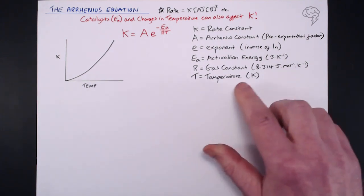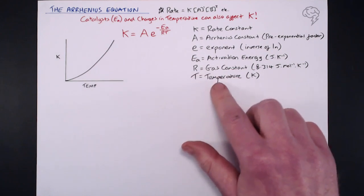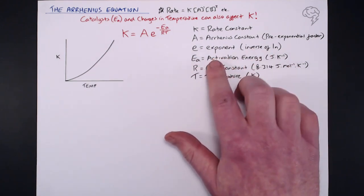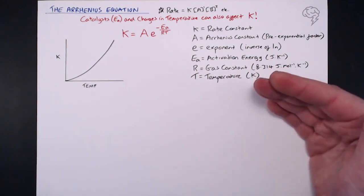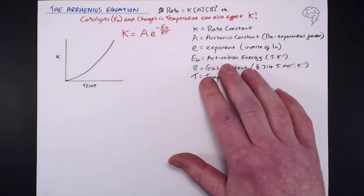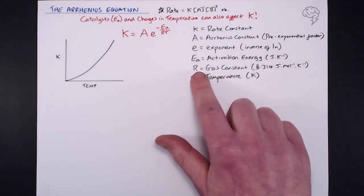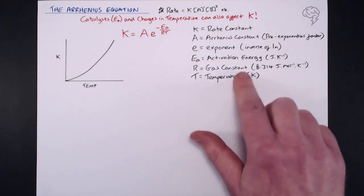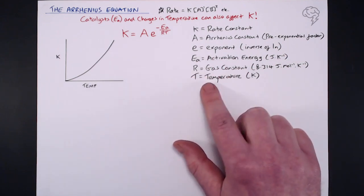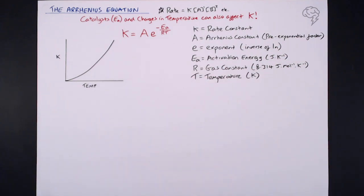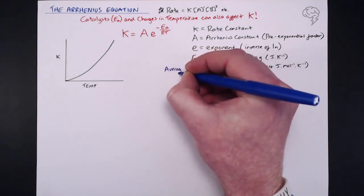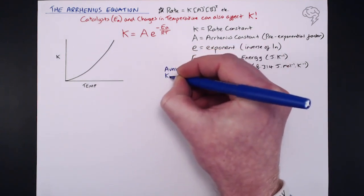Next, we've got to look at activation energy, R, and T. Activation energy makes sense — the lower the activation energy, the faster the rate of reaction. But where do the gas constant and temperature come in? Essentially, you put these two together and this gives you the average kinetic energy of the molecules in the system.